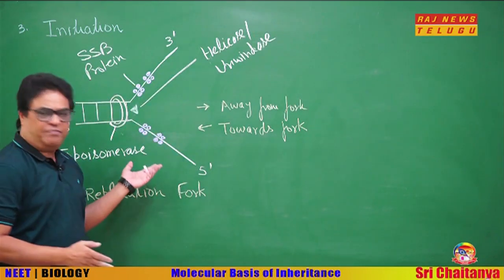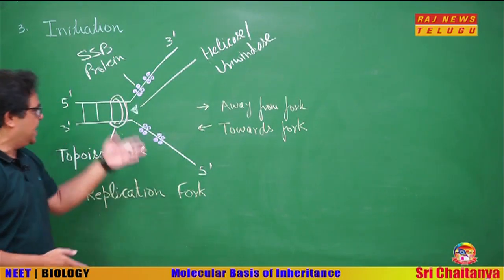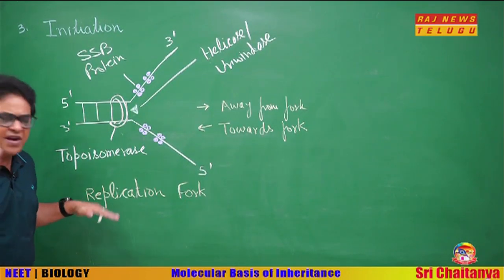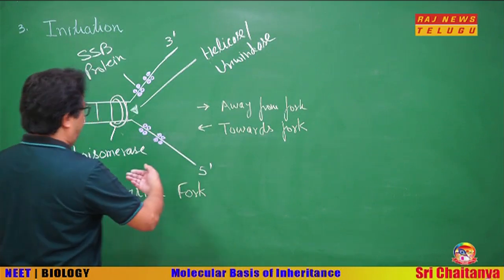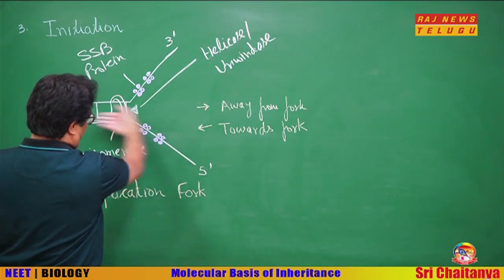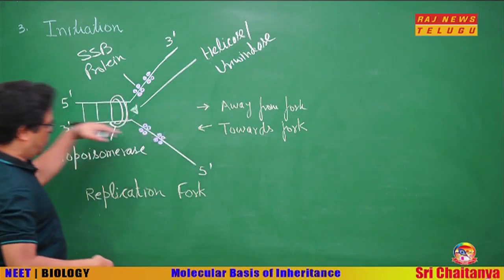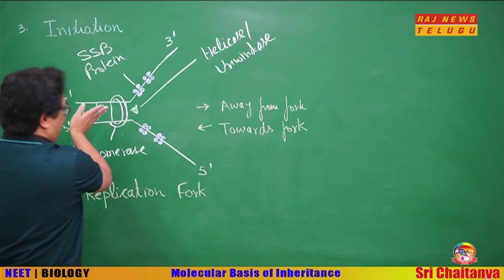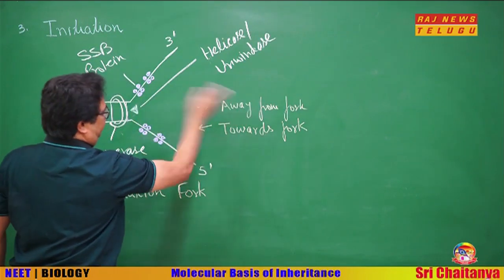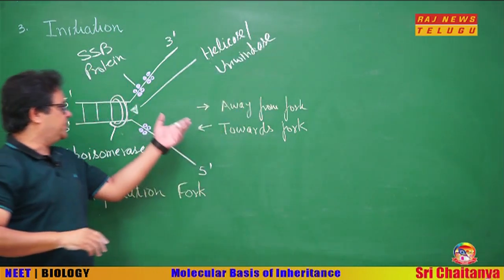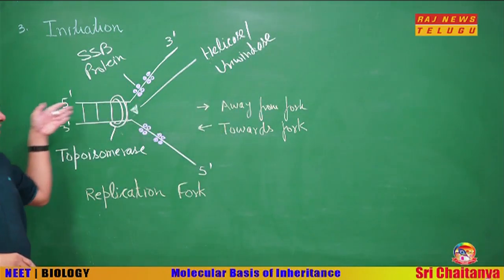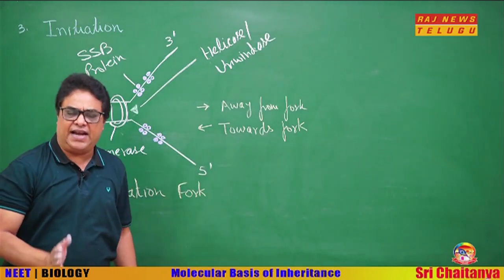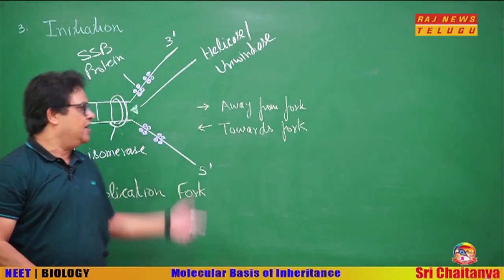This completes the initiation process and a replication fork is formed. Moving toward the closed end means moving towards the fork, and moving away from it means away from the fork — these two directions will be relevant for a question we will discuss later.